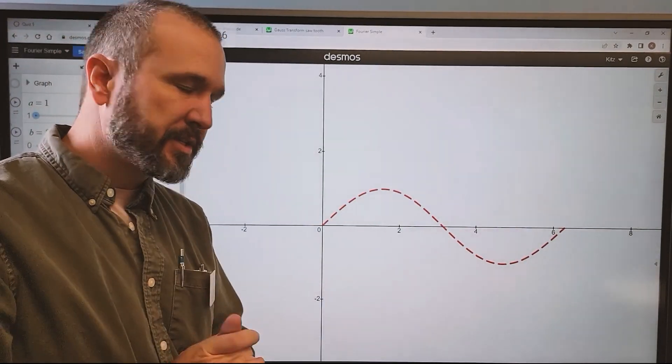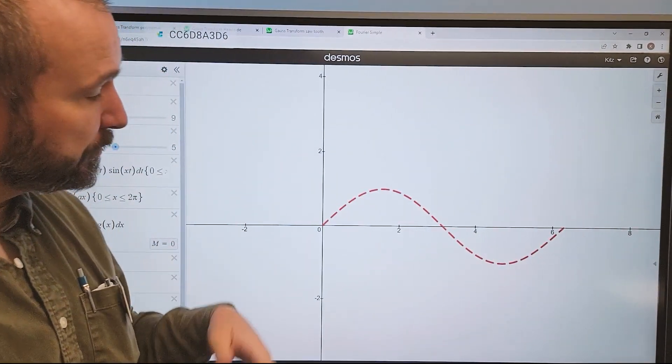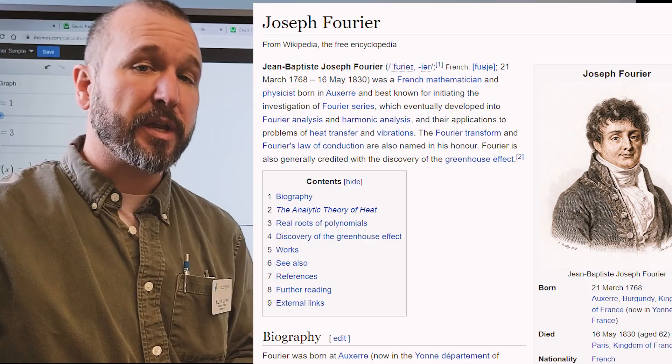I want to apply the same kind of reasoning, except now instead of having a density function that's shaped like a bell curve, I have a density function that's shaped like a wave. And we call this the Fourier transform.